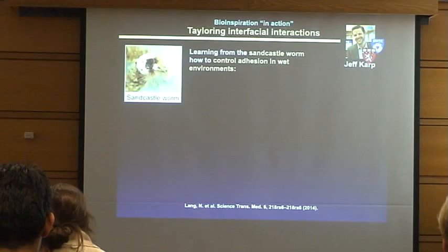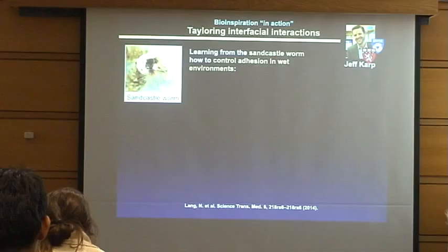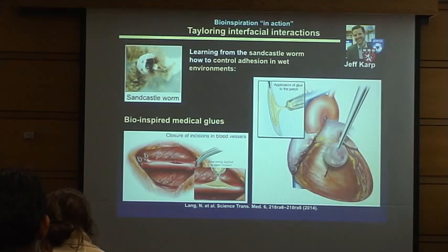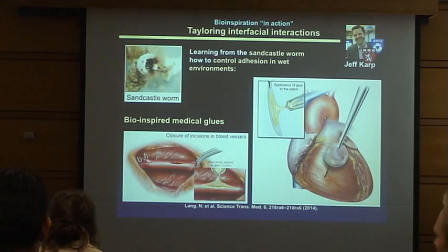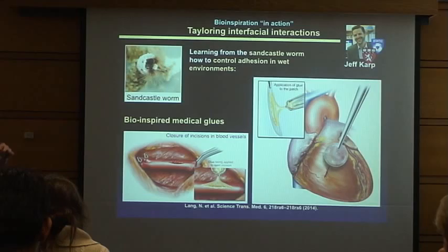The last example is Jeff Karp's work at Brigham and Women's Hospital. He looked at how a sandcastle worm binds sand grains together to build a tube in a wet environment, and took that as inspiration for surgical tools that work in wet environments — gluing tissues together and applying patches in cardiac surgery. They tested these patches to help children with holes in their hearts. The glue works in wet environments and can be selectively activated with UV light, giving the surgeon time to apply the glue before curing it.